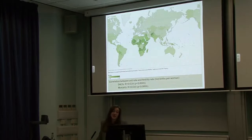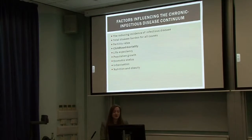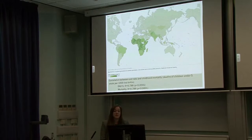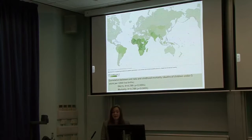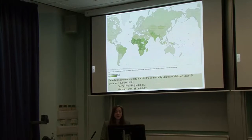Fertility is also linked to urbanisation - as people move into cities it's more expensive to have more children, among other factors. Moving on to childhood mortality - deaths of children under five per 1,000 live births - again we can see it's much higher in sub-Saharan Africa. This is correlated to the unit rate: as the unit rate decreases, the number of childhood deaths decreases, and there's a strong correlation between the two.